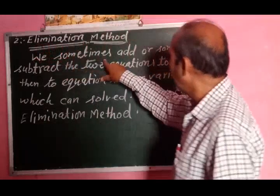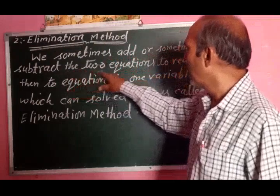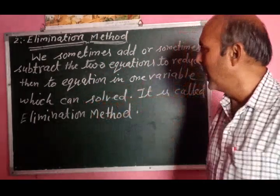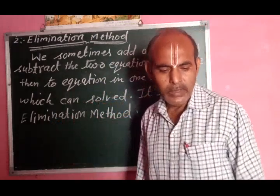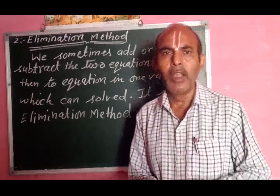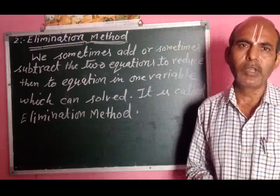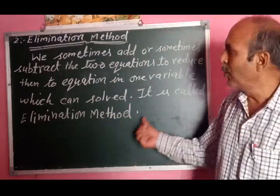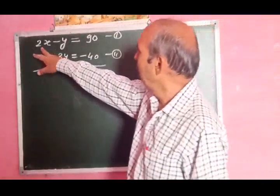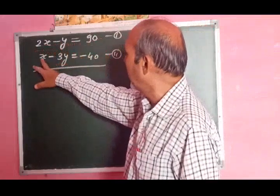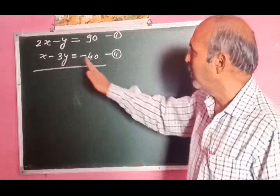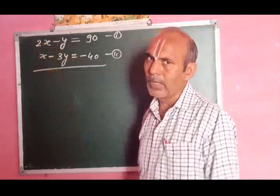Elimination method: we sometimes add or sometimes subtract the two equations to reduce them to one variable — this is called elimination method. जब हम दोनों equations को add या subtract करके one variable प्राप्त कर लेते हैं, उससे equation solve करते हैं, उसे elimination method कहते हैं. Example: equation first 2x - y = 90, equation second x - 3y = -40.